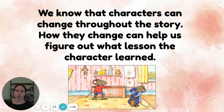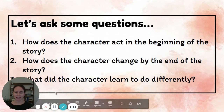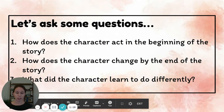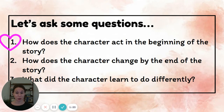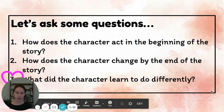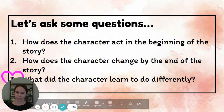We know that characters can change throughout the story, and how they change can help us figure out what lesson the character learned. When we think about the lesson that the character learned, we can ask ourselves these questions. Number one: how does the character act in the beginning of the story? Number two: how does the character change by the end of the story? And number three: what did the character learn to do differently? These three questions can help you when you're trying to figure out the lesson the character learned.